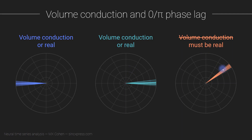In contrast, if the distribution of phase angles is off the real axis, this cannot be a volume conduction driven synchronization — it must be a true interaction between the two neural populations. This is the core idea of phase lag based synchronization measures: we play it conservative and accept the possibility of missing some true connectivity in order to prevent volume conduction artifacts. There's a trade-off between sensitivity and robustness to volume conduction, which I'll discuss further in a later video.